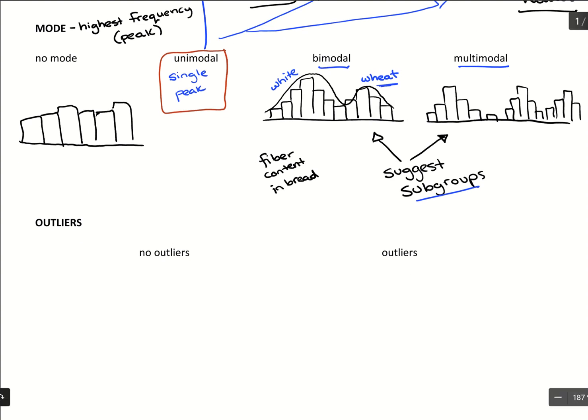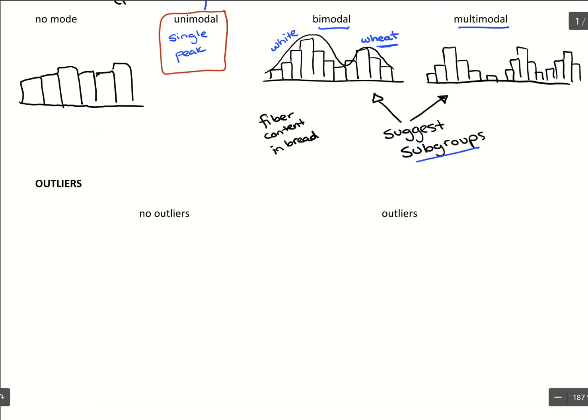Another thing we want to be careful of are outliers. And outliers look like if we have a graph that has a trend to it, everything's kind of matching up. And then what an outlier does is we have something extreme. An outlier is just an extreme value that comes through. And it just doesn't match up with the rest of our data.